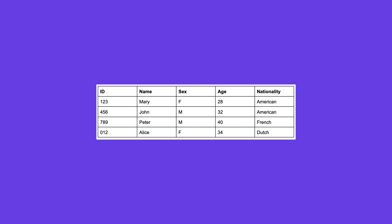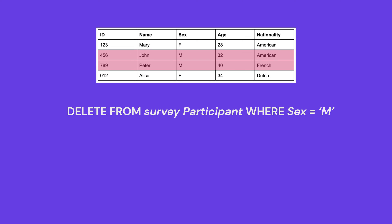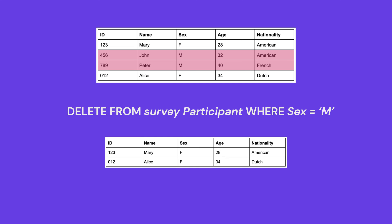Now let's see an example of deleting a type of data. Suppose you want to eliminate the male participants of the survey — the SQL statement will look like this, and we will get the corresponding output.